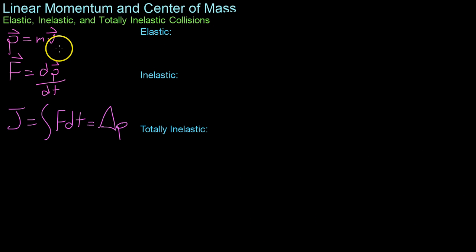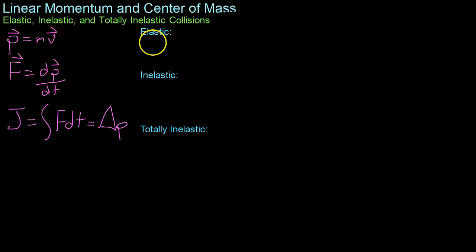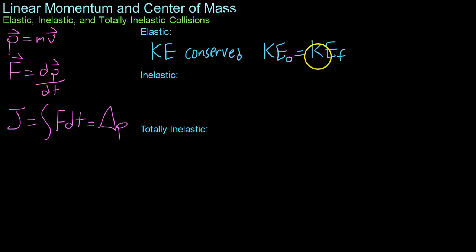As the last concept in this video, we're going to look at elastic, inelastic, and totally inelastic collisions. Elastic collisions are the simplest — these are where kinetic energy is conserved, so initial kinetic energy equals final kinetic energy. These don't happen too often in nature because of the second law of thermodynamics, and usually occur between subatomic particles, such as an electron and another electron coming close and then repelling outwards.